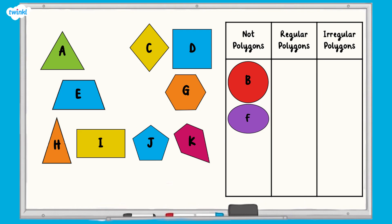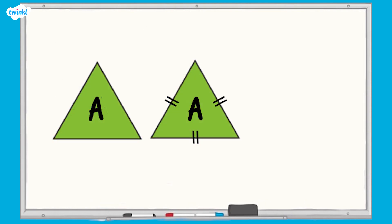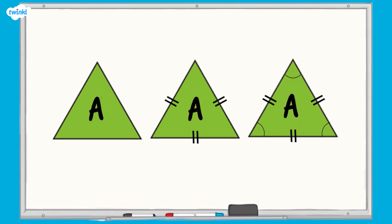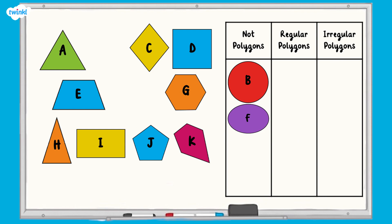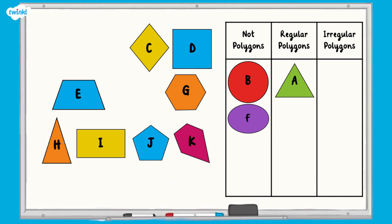Now let's have a look at our group of shapes and identify the regular and irregular polygons. Shape A is a triangle. All three of its sides are the same length and all three of its interior angles are the same size. This means that it's a regular polygon. We call a regular triangle an equilateral triangle. We can move shape A into the regular polygon column.